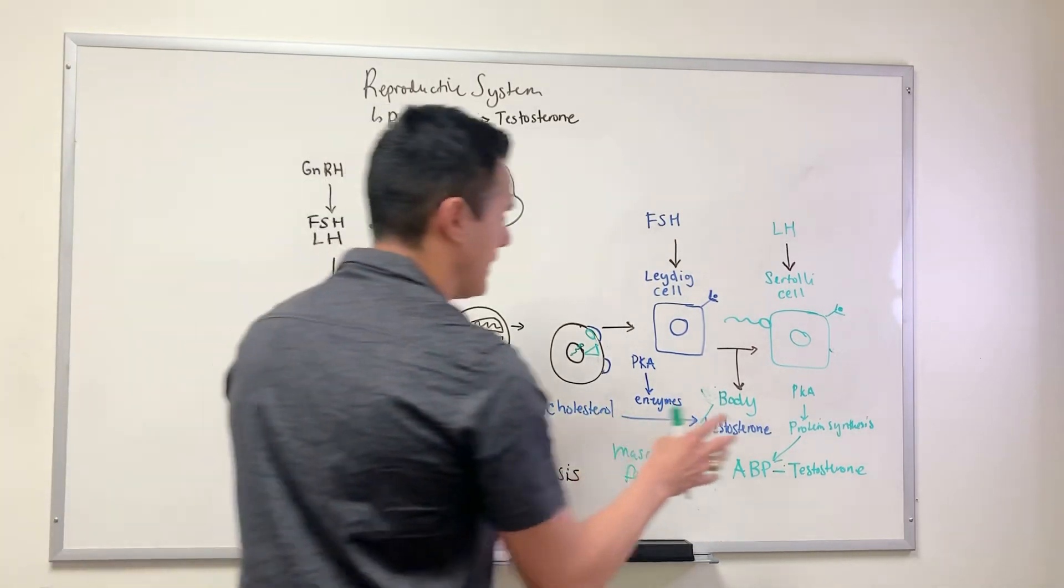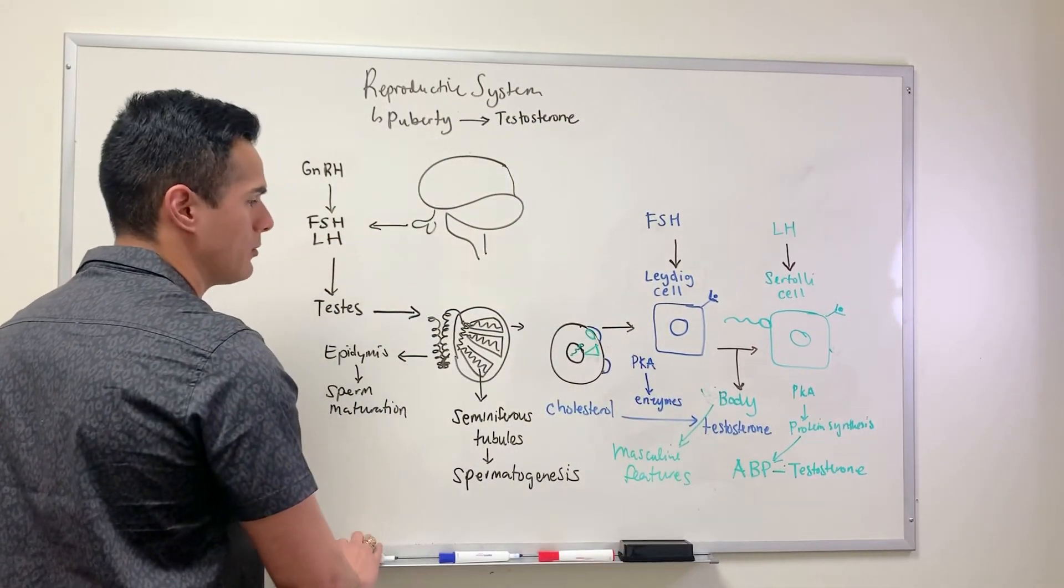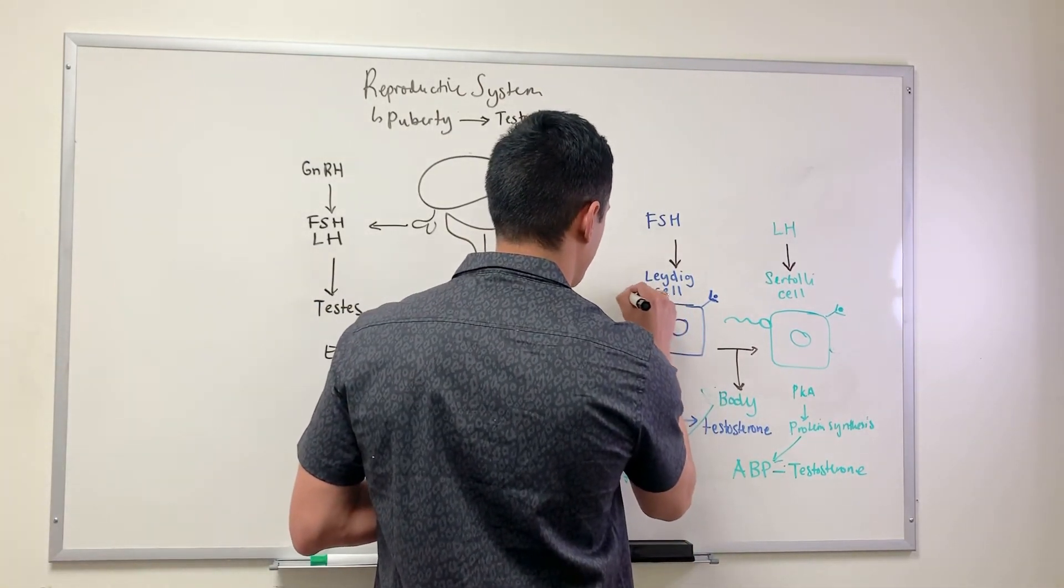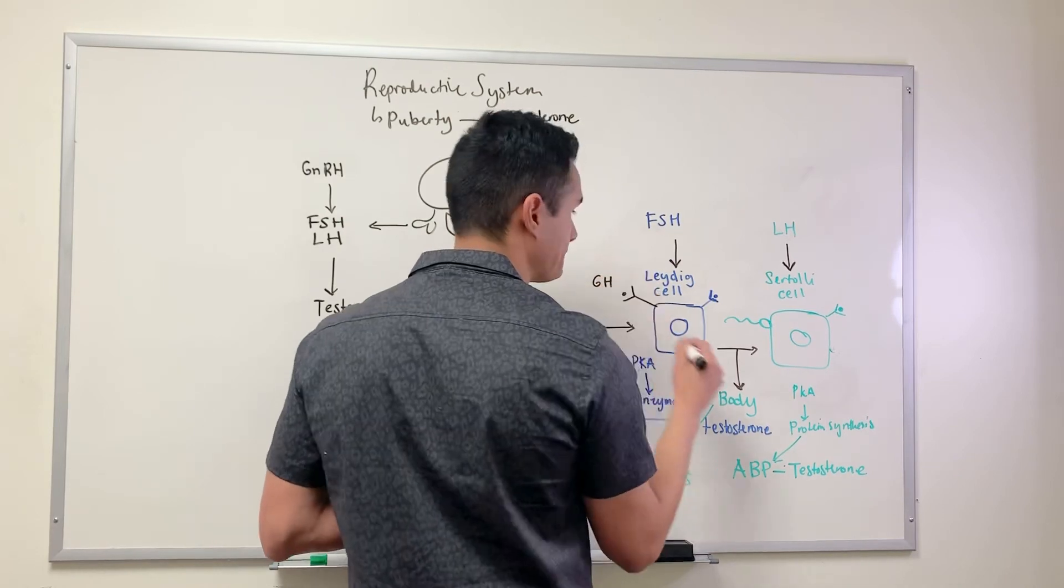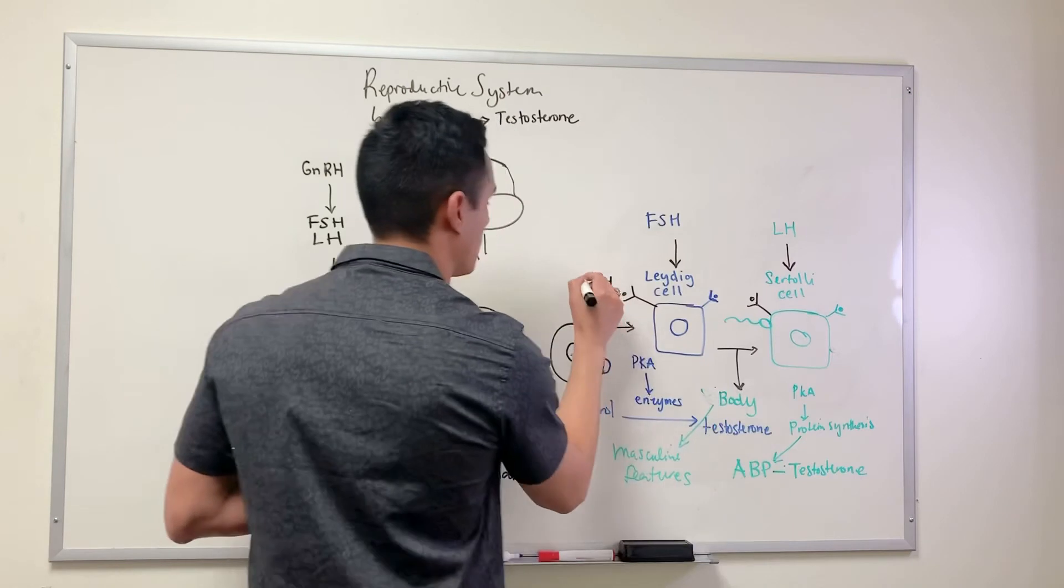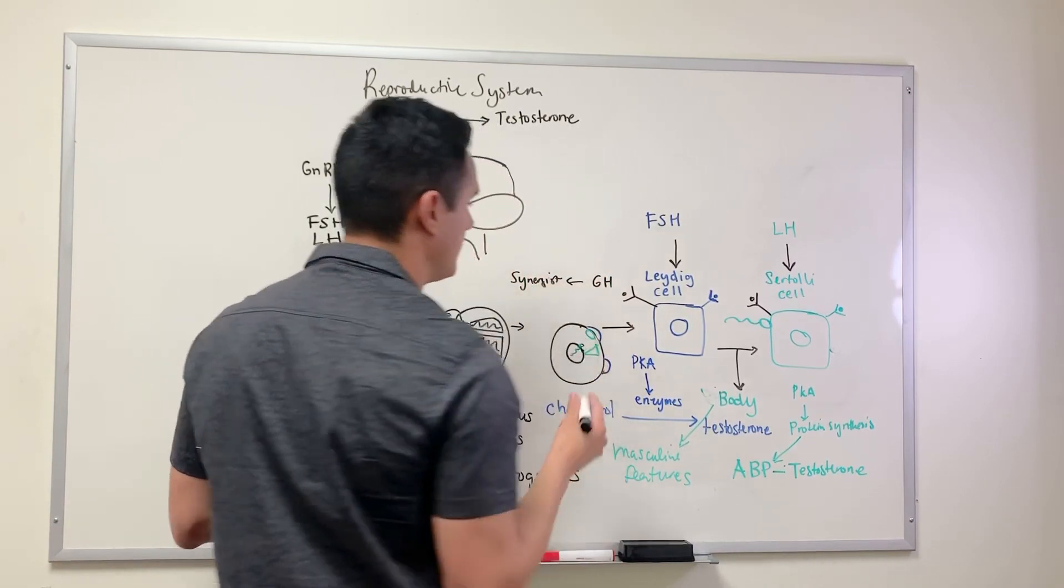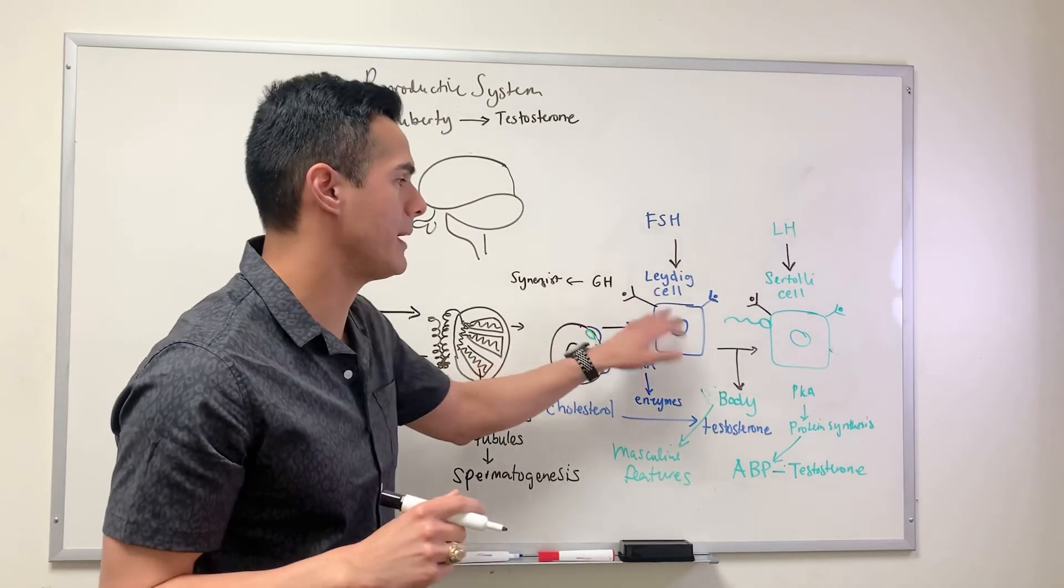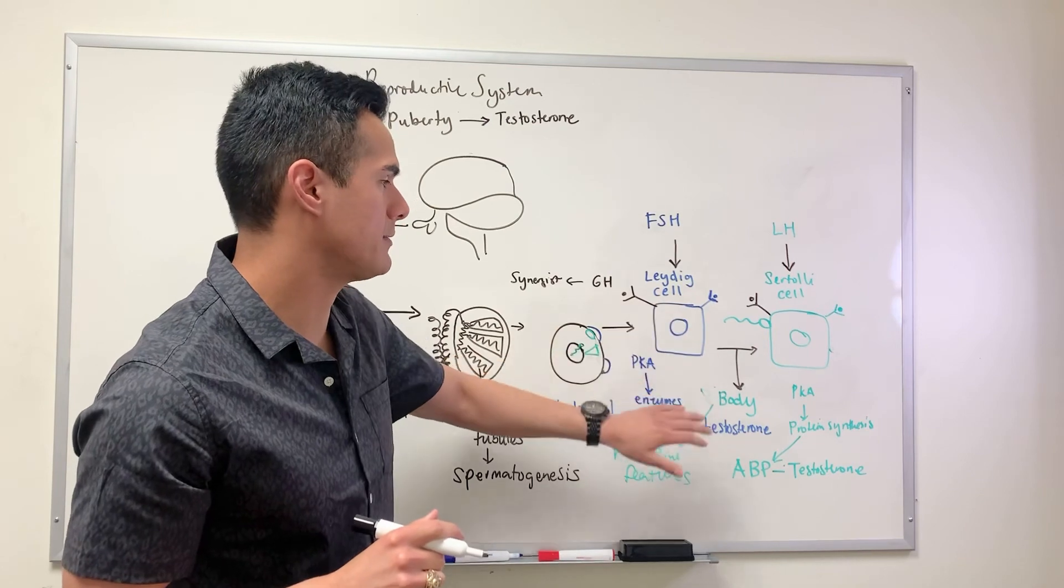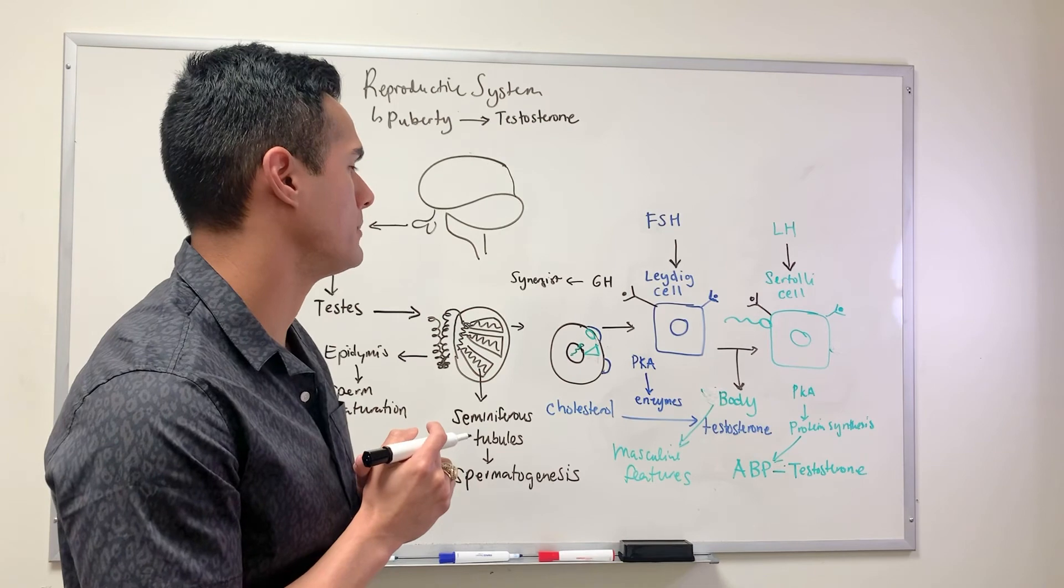One other hormone I want to mention is growth hormone. Growth hormone is a synergist, meaning it's going to help this process for the production of testosterone and also with spermatogenesis.